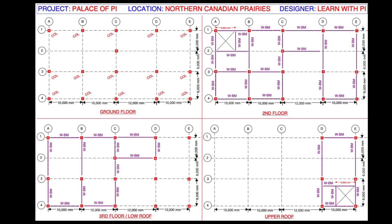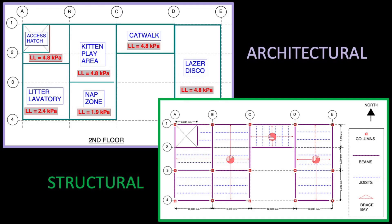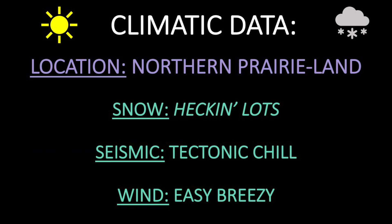After making a framing concept, it's time to dig deeper into how the structure is loaded. Architectural drawings show me what the spaces in the building are going to be used for, and that tells me how much load I need to allow for in each area. I also use climatic data from the building code to determine possible external loads like snowfall, earthquakes, or wind. In my market, it's usually snow that causes the most trouble.